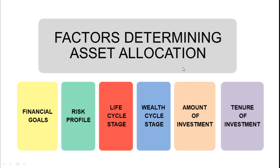Moving on to the factors that determine asset allocation. First is financial goal — what do you want to achieve? If that objective requires a large sum of money in a shorter time period, you would be investing for higher returns and taking higher risk. For example, if you want to accumulate funds for buying a home, which could cost between 15 lakhs to crores, you need to generate a return of about 13 to 15 percent. Over a period of 5 to 10 years, you would be able to manage that amount. So it depends on the financial goal where you want to allocate.